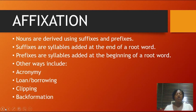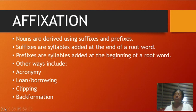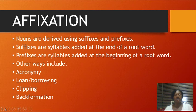Nouns are derived using suffixes and prefixes. Suffixes are syllables added at the end of a root word. Prefixes are syllables added at the beginning of a root word. Other ways we can form words include: acronym, blending, loan and borrowing, clipping, back formation, and conversion. There are more of them, but we shall discuss those later.